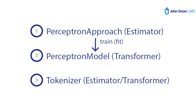In terms of examples, for part-of-speech we have the perceptron approach. Basically, the approach extends from an estimator of Spark ML and has the fit function, which is the training function. Once training is finished, the perceptron approach will become a perceptron model. This is already a Spark ML transformer, already trained and ready to transform datasets with predictions. These are usually the ones we save, share, or put in a pipeline for prediction.